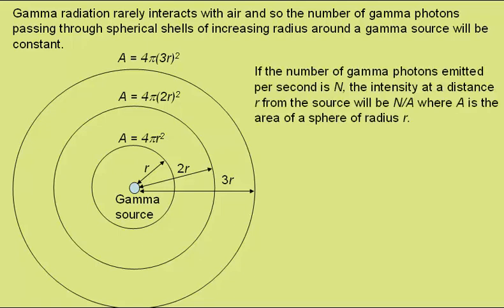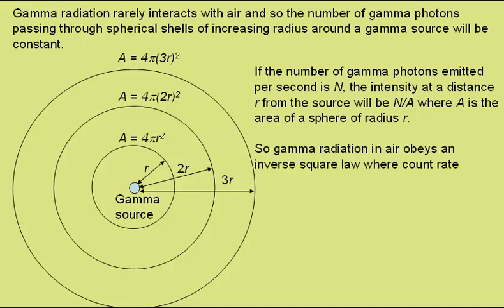If the number of gamma photons emitted per second is N, the intensity at a distance R from the source will be N/A, where A is the area of the sphere. So gamma radiation in air obeys an inverse square law, where the count rate C equals the entire count rate from the source in all directions, C₀, over the area 4πR².